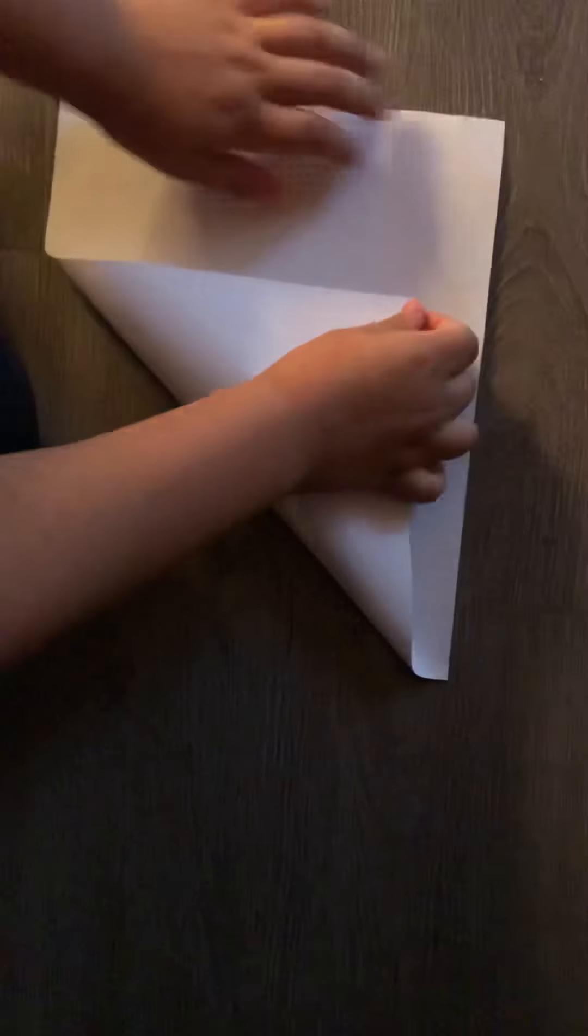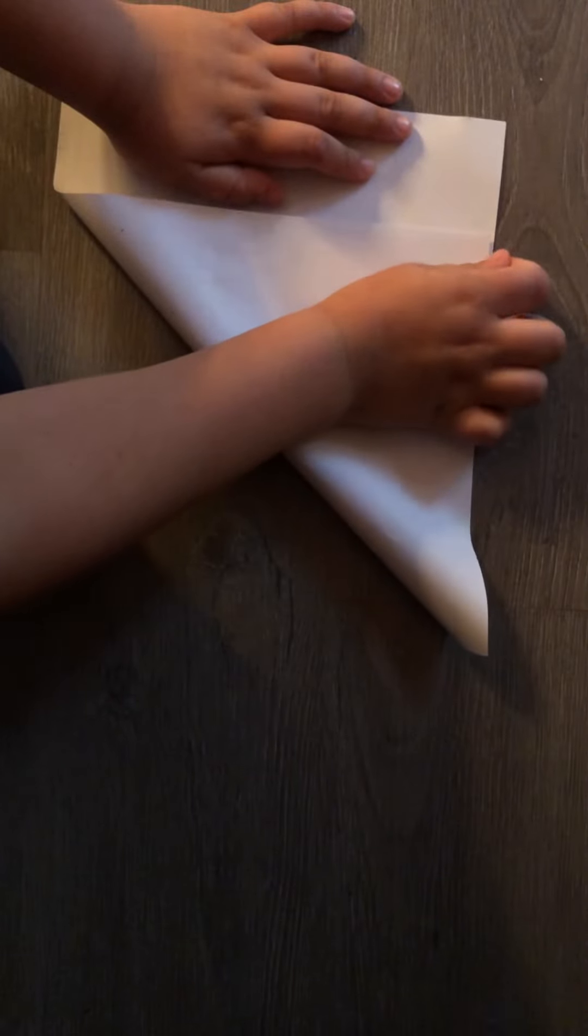So the first thing you need to do is fold this like this, make a triangle with a tiny little square. Don't forget to crease it. You should have something like this.